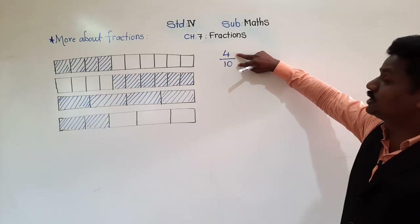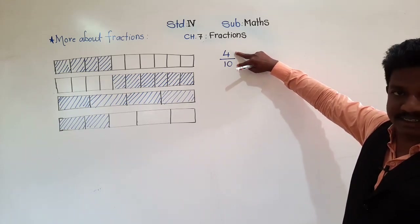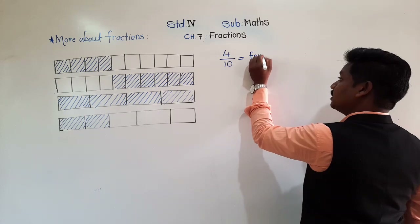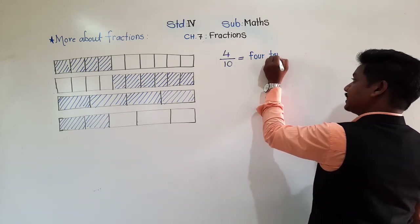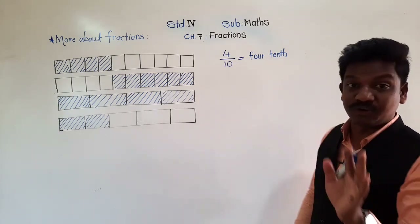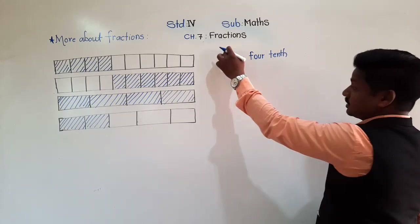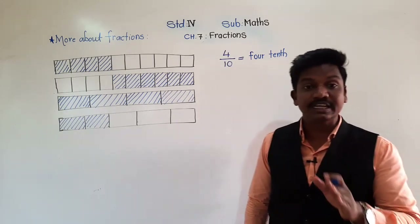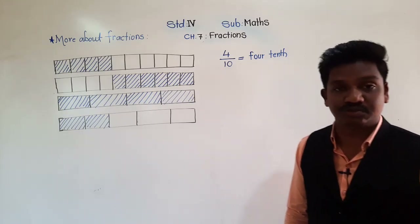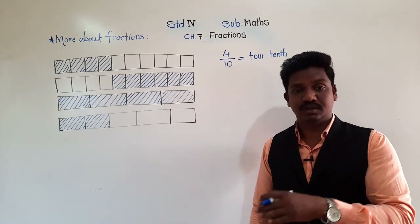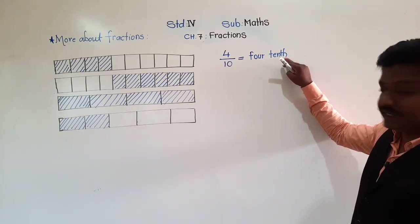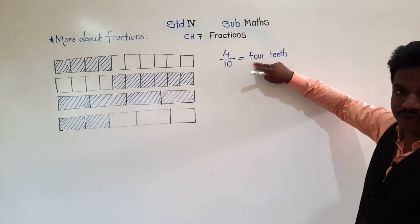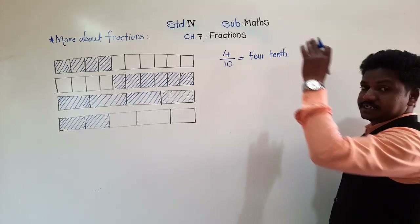The question is how to read this. This can be read as 4, 10ths. Not just 4, 10 — the number above the bar is spelled as it is, '4', and the number below the bar is written in ordinal form: 1st, 2nd, 3rd, 4th, 5th, 6th, 7th, 8th, 9th, 10th, 11th, 12th, 13th, likewise. So below the bar it is 10th. And the number above the bar as usual — 4. So we read it as '4, 10ths'.